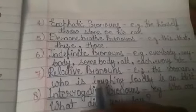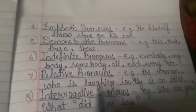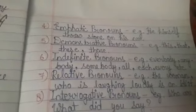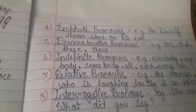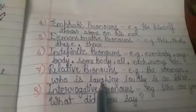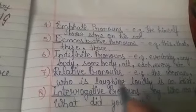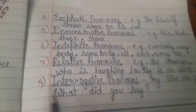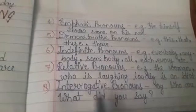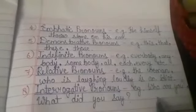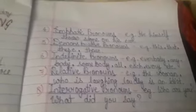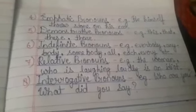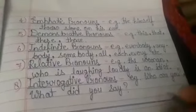Seventh is relative pronoun. Example: 'The woman who is laughing loudly is an idiot.' When someone has a relative name, we call it a relative pronoun — 'who' here is the relative pronoun. Eighth is interrogative pronoun — for example, 'Who are you?' and 'What did you say?' When a question is put using a pronoun, it is an interrogative pronoun.